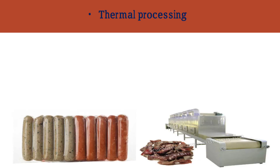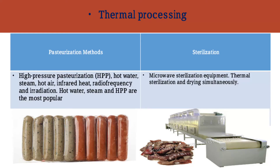Thermal processing is another method of meat preservation. There are two methods: pasteurization and sterilization. In pasteurization, several methods are applied, including high pressure pasteurization, hot water, steam, hot air, infrared heat, radio frequency, and irradiation. Hot water, steam, and HPP are the most popular pasteurization methods for meat preservation.